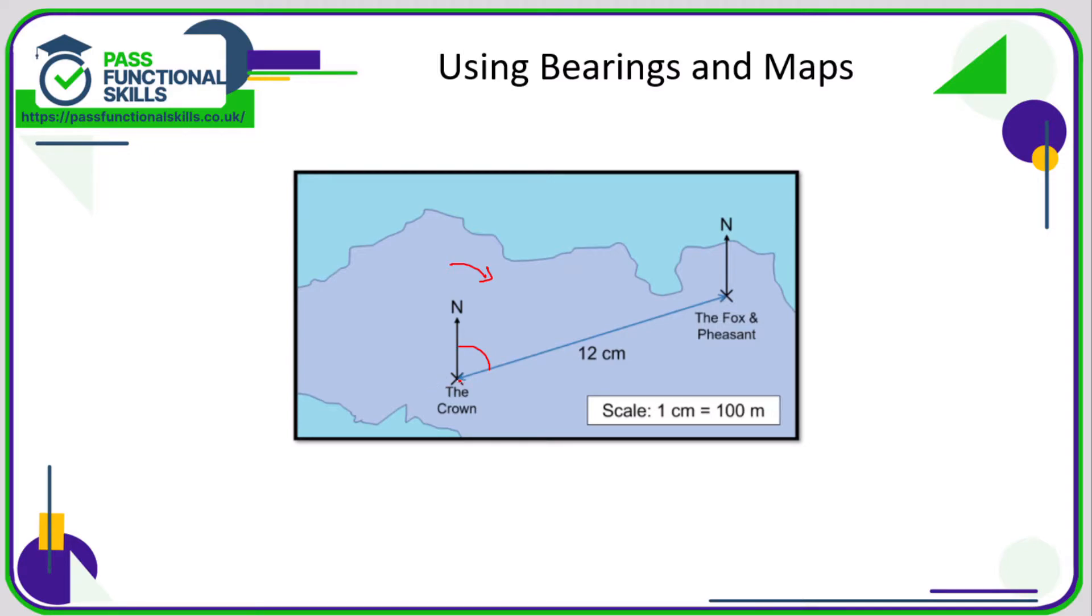So what we need to do is grab our protractor, put the center of our protractor on the X of The Crown, make sure the line of the protractor is in line with this line, and it will be in line in this direction as well, and just see what number north is now facing.